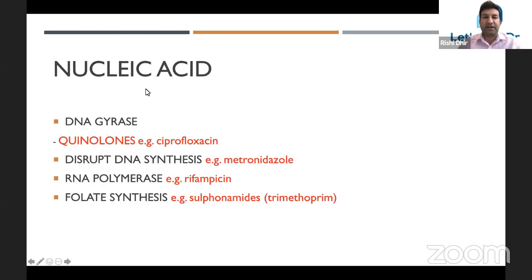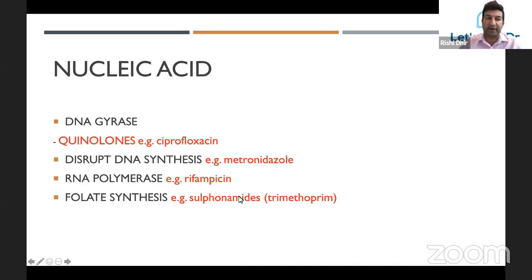Finally, antibiotics which act on the nucleic acids. Those acting on DNA gyrase are your quinolones such as ciprofloxacin — very good for gut or enteric organisms. Those which disrupt DNA synthesis include metronidazole. Those which act on RNA polymerase include rifampicin. Those which inhibit folate synthesis include trimethoprim, which is a sulfonamide. That is a comprehensive look at bacteria and antibiotics for the FRCS — you do not need to know it in any more detail than that for the exam.